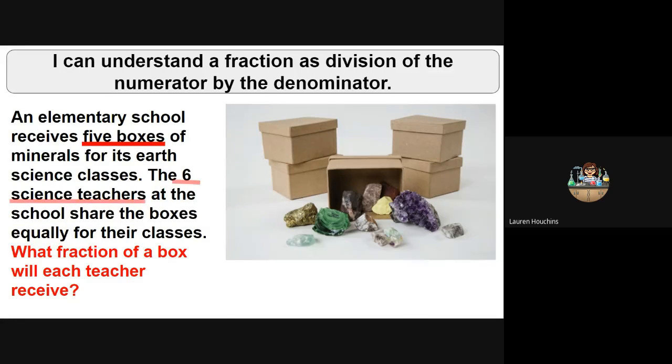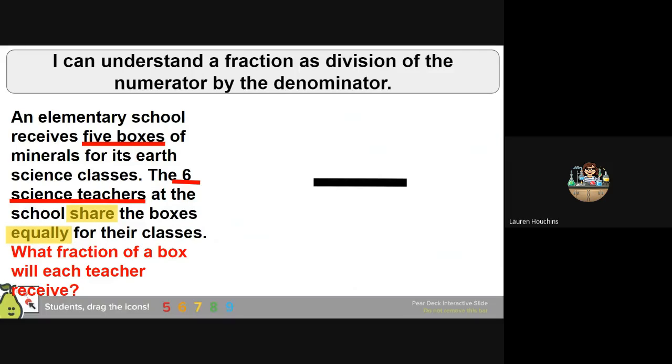So we have our five boxes, six science teachers. So using that information, make the fraction. What fraction of a box will each teacher receive? Remember, our numerator is what's being shared. Our denominator is how many people are sharing it.